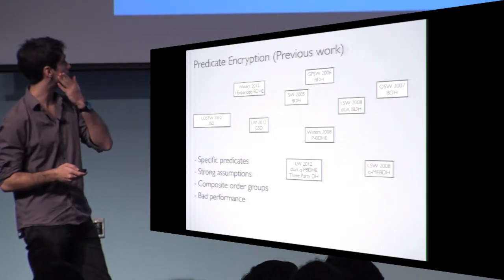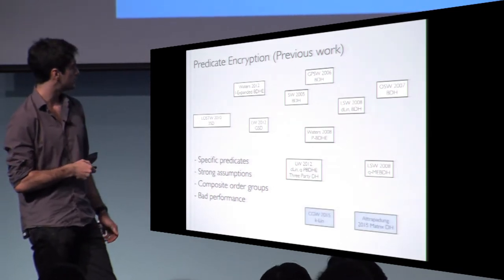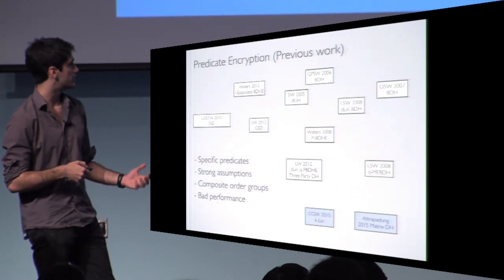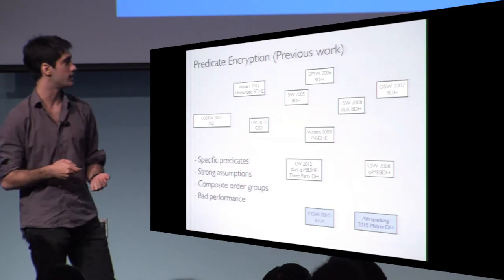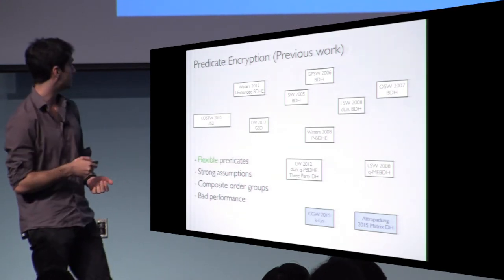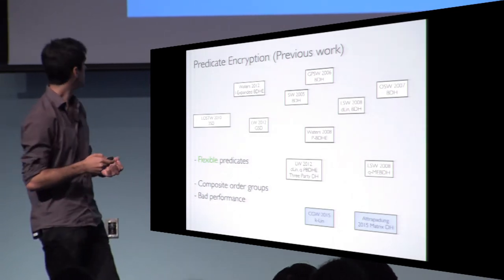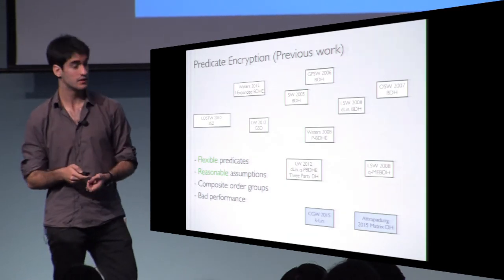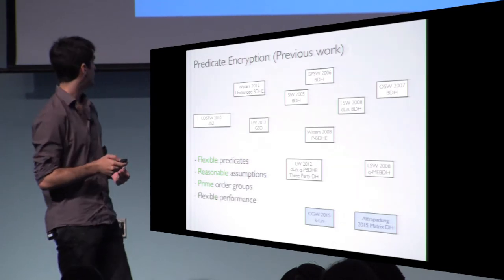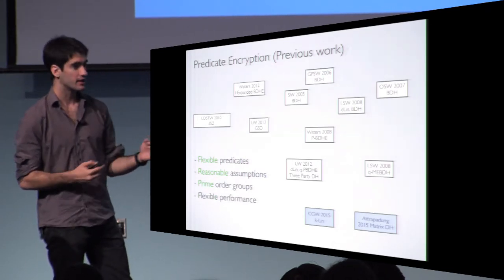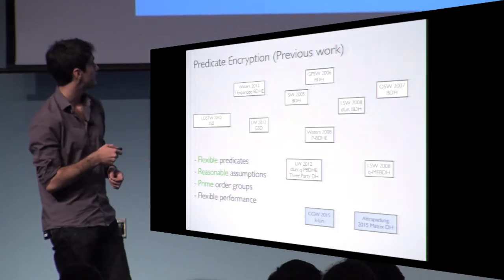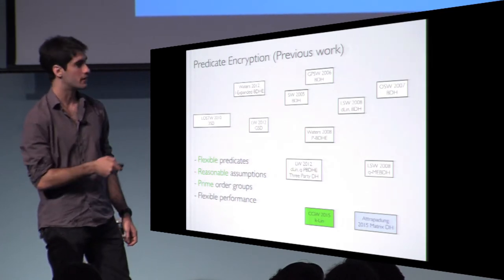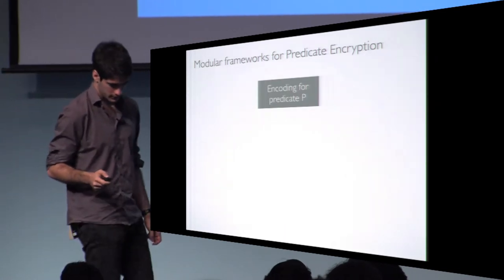Two years ago, two works appeared that allowed building predicate encryption in a much simpler way. They allow flexible predicates — you are not restricted to specific ones — and they use reasonable assumptions such as K-Lin and the more general matrix DH. They are defined over prime order groups and have flexible performance. Predicate encodings are a building block used in one of these works, and both works are modular frameworks.